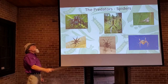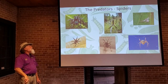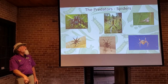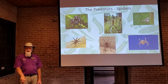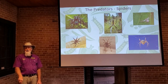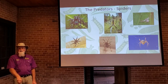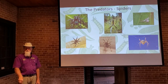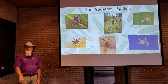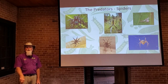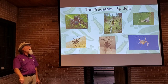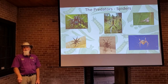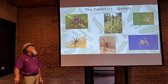The zebra jumping spider really does jump — that's how they attack and subdue their prey. As prey comes by or flies over, they leap onto it and are able to take it down.